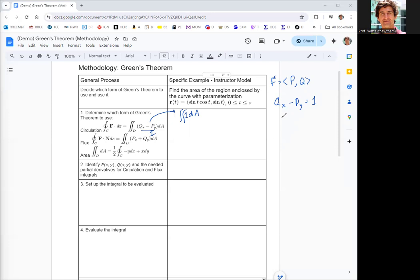But one of the easier ways to do it is to just have this be one half, and then this be negative one half. So qx is one half, py is negative one half.